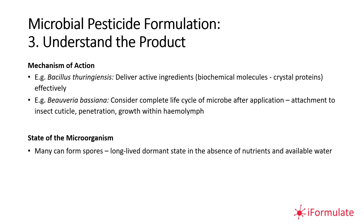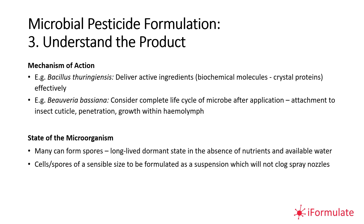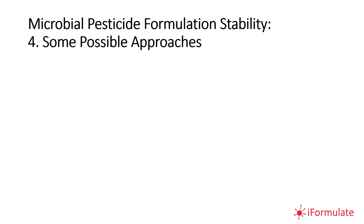You also need to understand the product's mechanism of action. For Bacillus thuringiensis, the aim is to deliver the active 'crystal proteins' — biochemical molecules the bacteria produce. For Beauveria bassiana, you need to consider the complete life cycle post-application: how the microbe attaches to the insect cuticle, penetrates, and grows within the organism. Some microorganisms can form spores — a long-lived dormant stage — which is beneficial for a formulator, as these spores need to be formulated into suspensions that won't aggregate and clog spray nozzles.